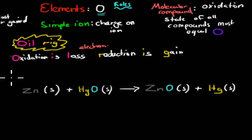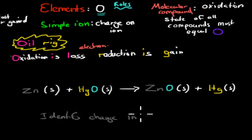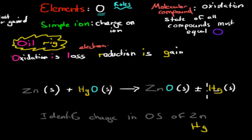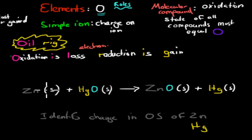For example, if we're given this kind of question, we have to identify the change in oxidation state of zinc and of Hg (mercury). We have this equation and we need to figure out, going from reactants to products, how the oxidation state has changed. We can use the rule that elements always have an oxidation state of zero. So zinc is an element — oxidation state zero. And mercury by itself is also an element — so zero. But these two are compounds, so we can't use those rules.